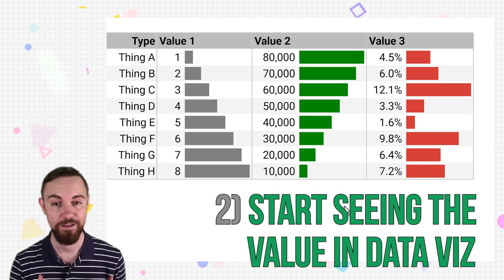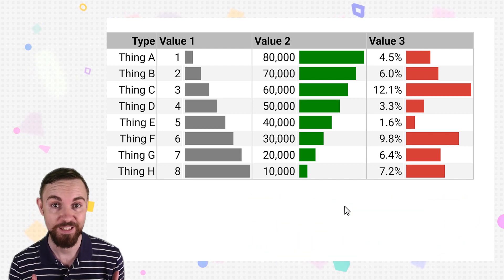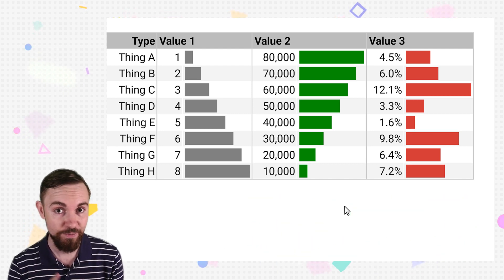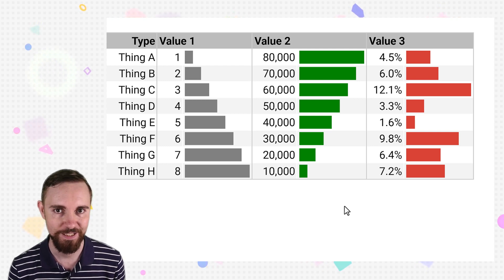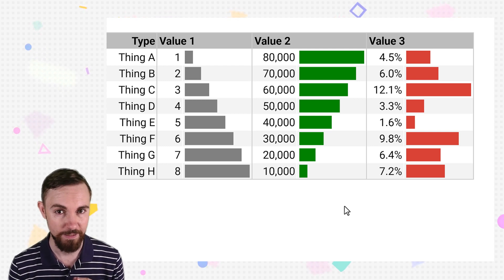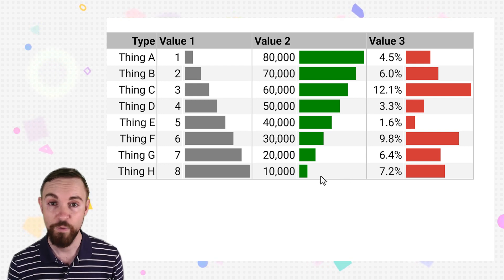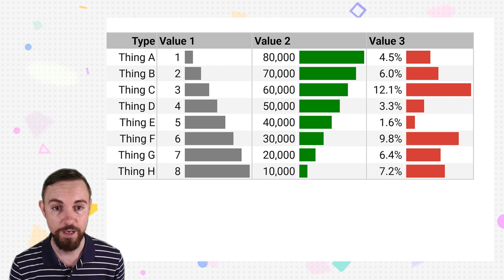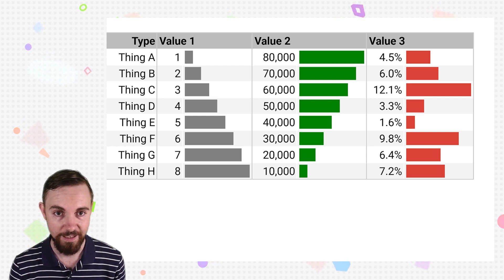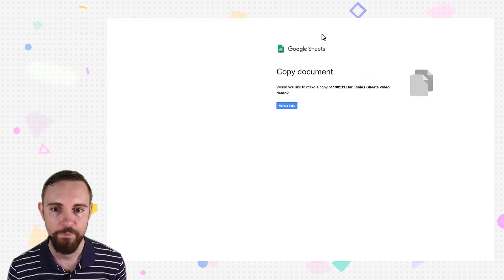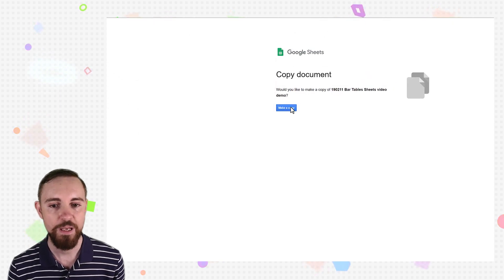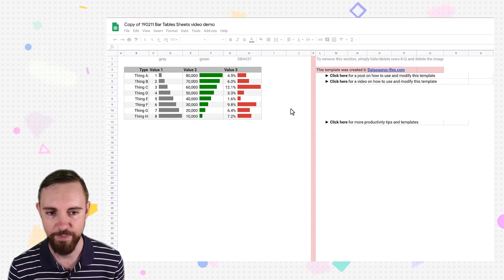Now you might be asking me, Dave, how do I build these? And it's super easy. I've made it even easier for you using a template in Google Sheets. I will give other templates in Data Studio and Tableau soon, but for now I've started here. Without going into details, I'll give you a copy of the link. When you first are presented with the link, all you need to do is go make a copy, or you won't touch my master template, and you'll just make a copy for you to play around with as much as you want.